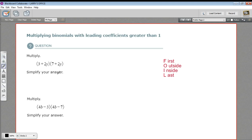In these problems, we are multiplying binomials, and a binomial is just something that has two terms. So here, we have a 3 and a 2y added together. That's a binomial, and we're multiplying that by 7 plus 2y, another binomial.